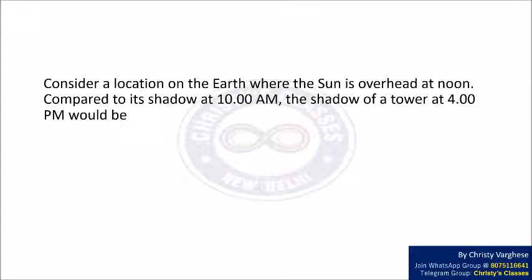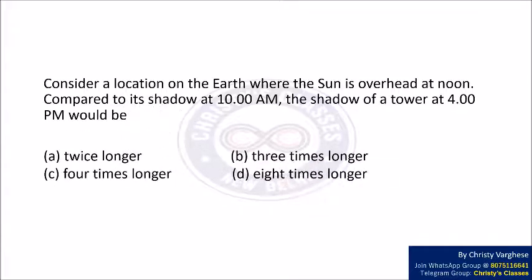Consider a location on the earth where the sun is overhead at noon. Compared to its shadow at 10 a.m., the shadow of a tower at 4 p.m. would be: Option A, twice longer; Option B, three times longer; Option C, four times longer; and Option D, eight times longer.